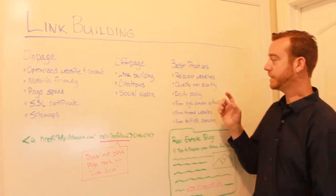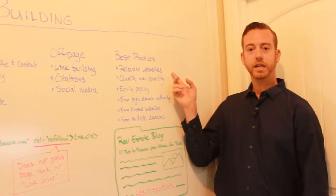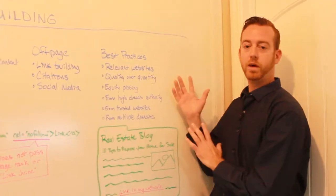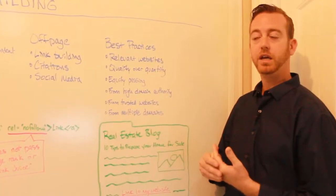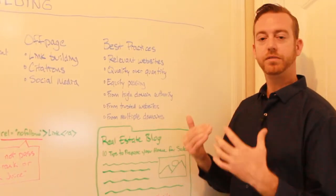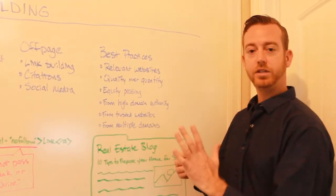And some of the best practices is that you want to get links from other relevant websites. If you're a mortgage company or a real estate company, you really want links from relative industries. So you could have, if you're a real estate agent...